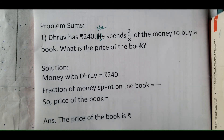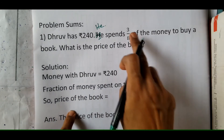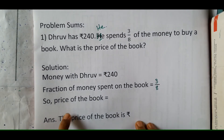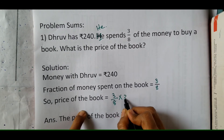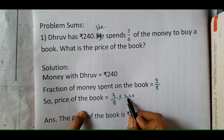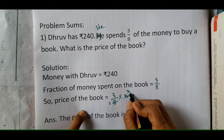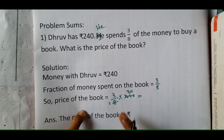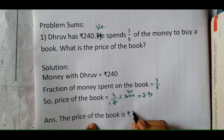Let us do some problem sums. Question 1: Dhruv has rupees 240. He spends 3 upon 8 of the money to buy a book. What is the price of the book? Money is rupees 240. Fraction spent on book is 3 upon 8. Price of the book is 3 upon 8 of 240 — 8 threes are 24, so 38 eights are 240. Cancelling gives 3 into 30 upon 1. 3 thirties are 90. So the price of the book will be rupees 90.